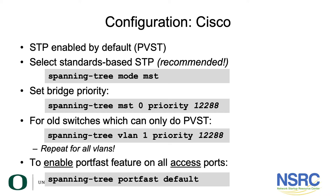In some cases, you might have a switch that can only do per-VLAN spanning tree, so you have to say 'spanning tree VLAN 1 priority' and set the priority. You have to repeat it for every single VLAN configured on that switch. To enable the portfast feature on access ports, you can say 'spanning tree portfast default'.